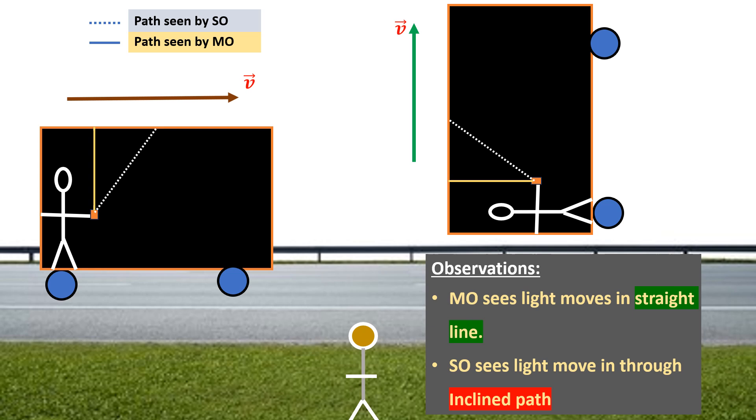Notice that this second image is like that for general relativity where the ship was moving at a constant velocity.